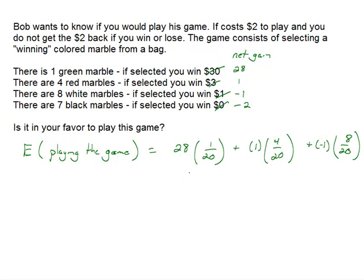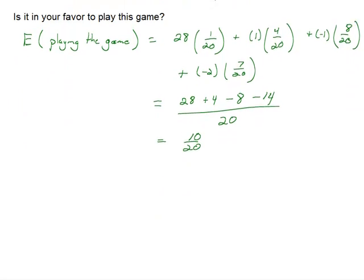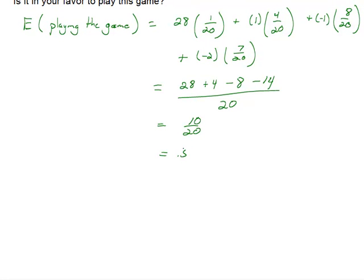On my very last part here, the black marble says that I lose $2 and I've got a 7 out of 20 chance for that to occur. So I need to simplify this. I have the denominator of 20 for all these fractions, so I have 28 plus 4 minus 8 minus 14 when I do the multiplication to the numerator all over 20. Adding these together, 32 minus 22 gives me an expected value of 10 over 20.